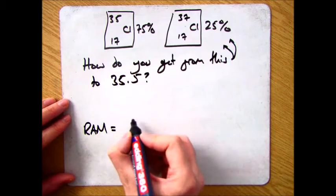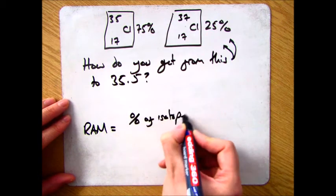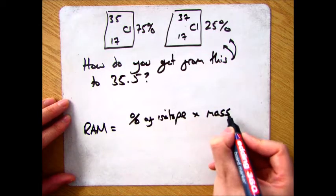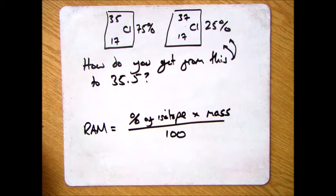Now the equation that you need for that is the relative atomic mass is the percentage of the isotope multiplied by the mass of the isotope and then divide it all by 100.